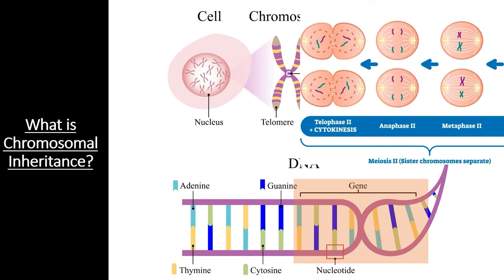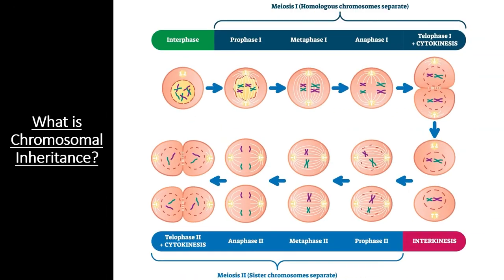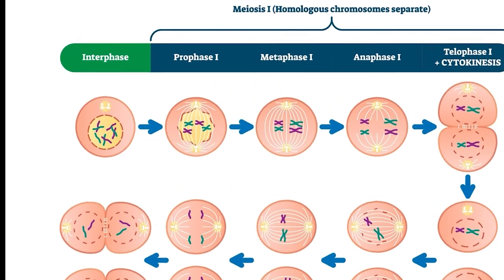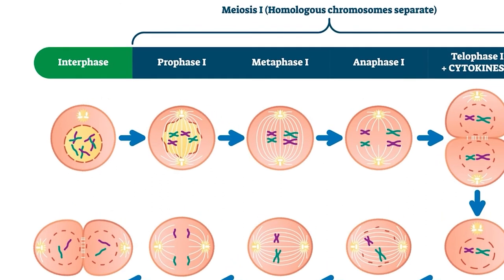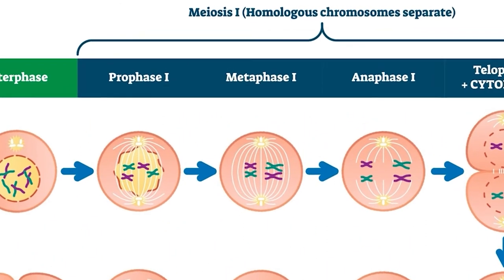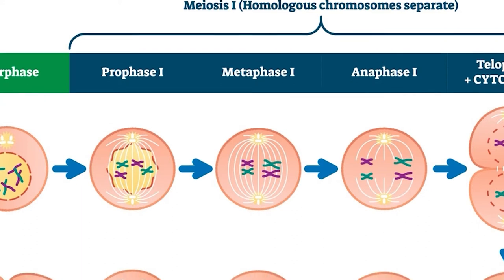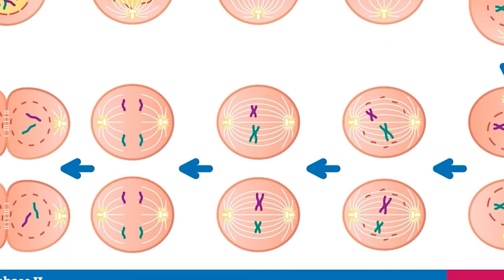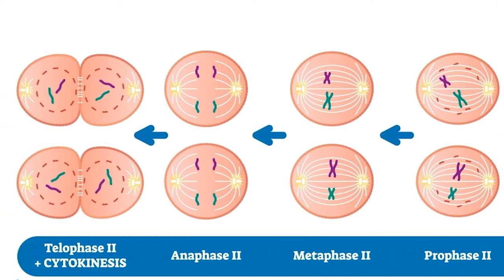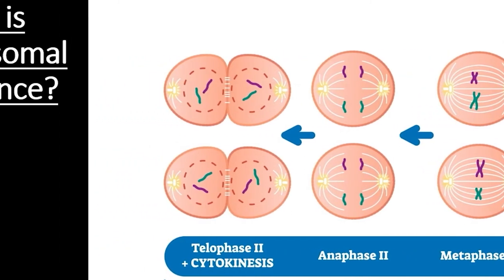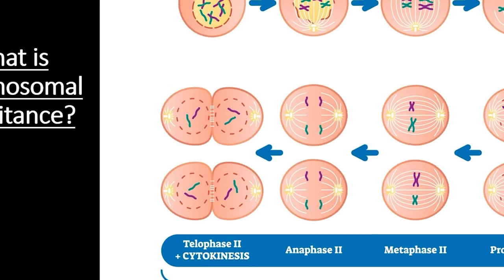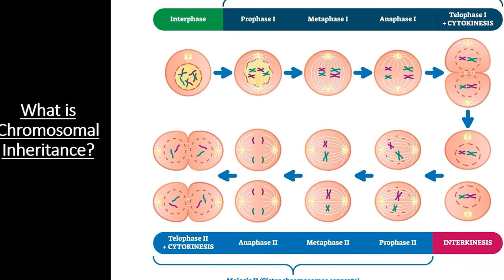In diploid organisms, each chromosome has a homologue from a different parental source that carries different alleles for the same set of genes. The process of meiosis first separates these homologous chromosomes, before separating sister chromatids. This results in gametes that are haploid and carry only one copy of each chromosome. You can review this process in our video on section 5.1.